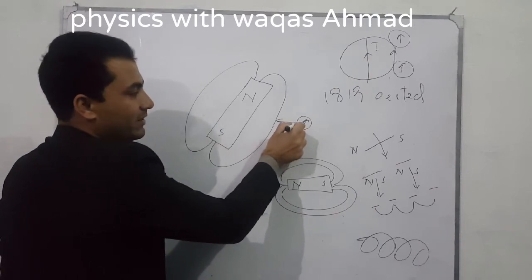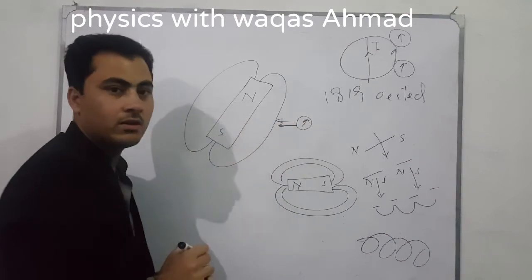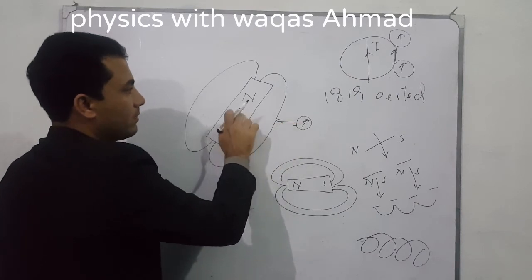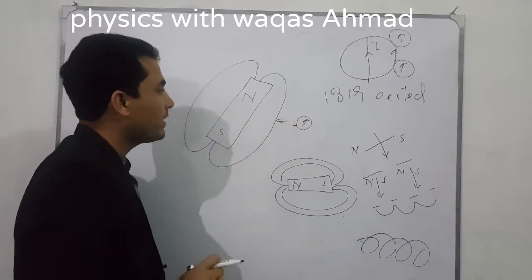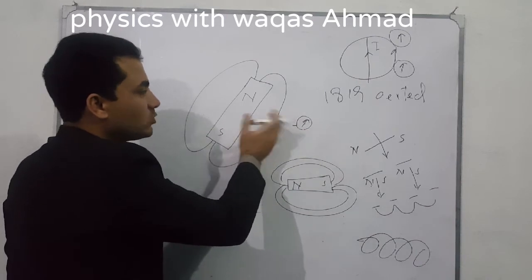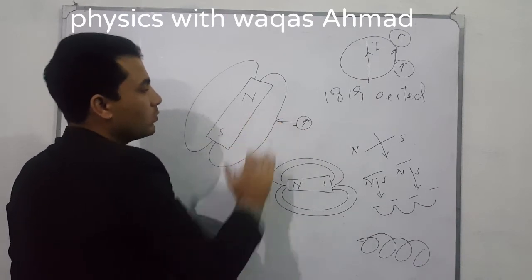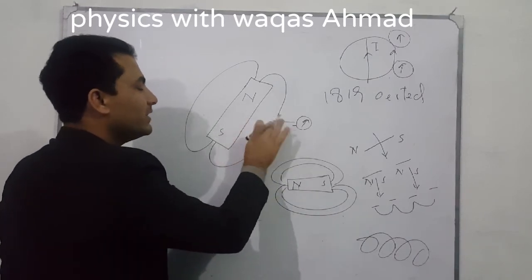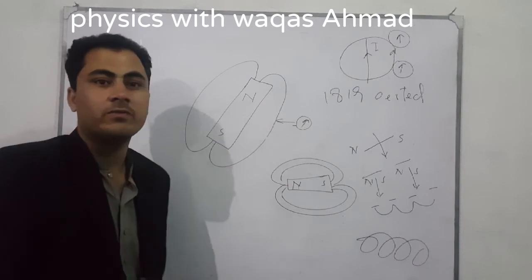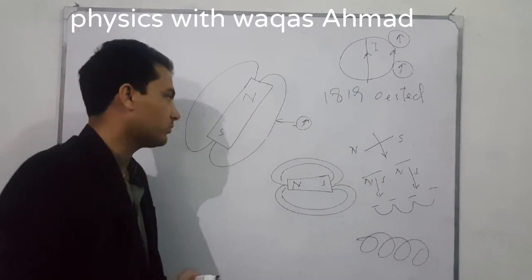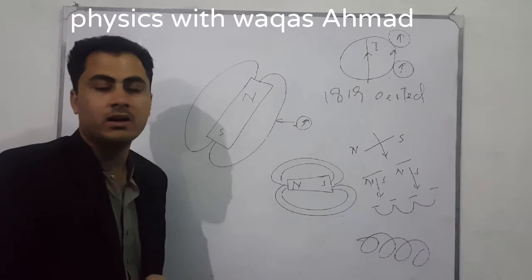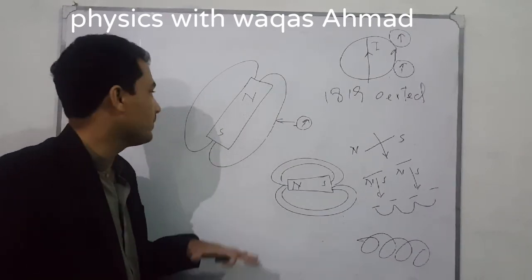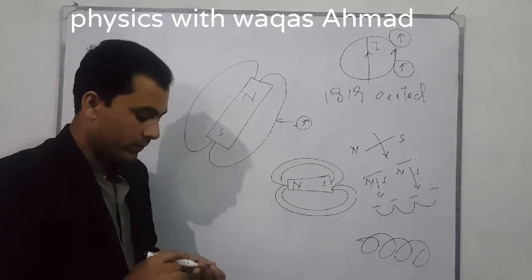You will notice that the compass is never in direct contact with the bar magnet, yet it is influenced by it. This is because magnetic force is not a contact force — it acts at a distance through the magnetic field in that particular space or region.